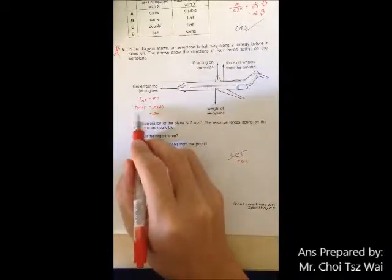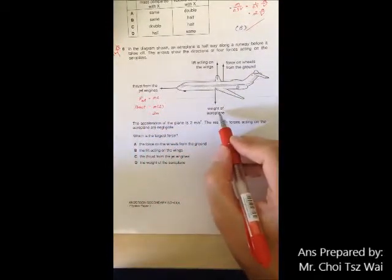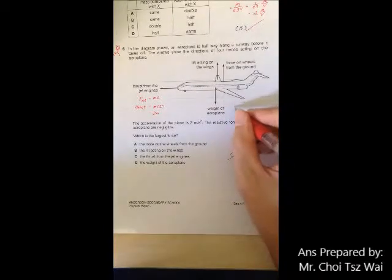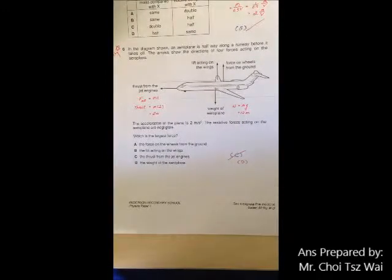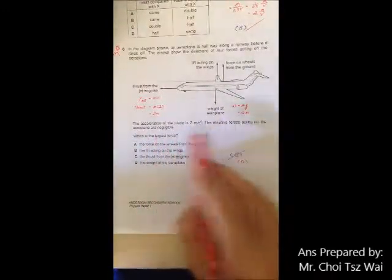If you look at the weight of this plane, you know that the weight equals mg which is 10m. So just by looking at these two forces, you can see that 10m is definitely bigger than 2m.